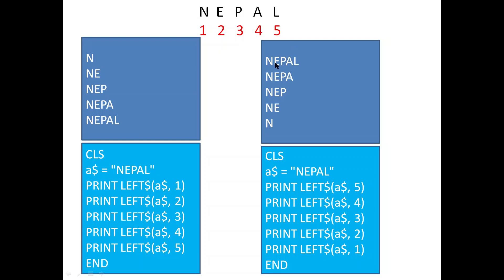For the next pattern we are first printing NEPAL — five characters from the left hand side — because N at the left is present in every row. Then we print four characters, then three, two, and one. We can use the left dollar function because N is available at the left hand side. So we write: print left dollar, a dollar, comma 5 — that gives NEPAL. Second time four characters, then three, two, and one.